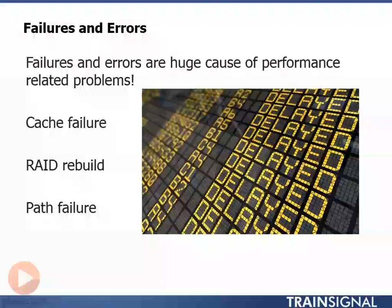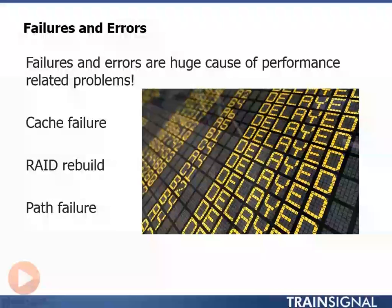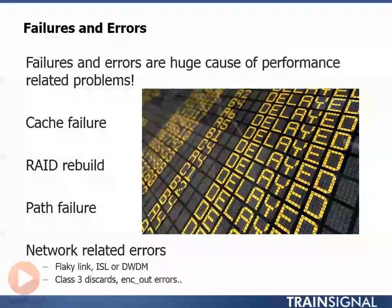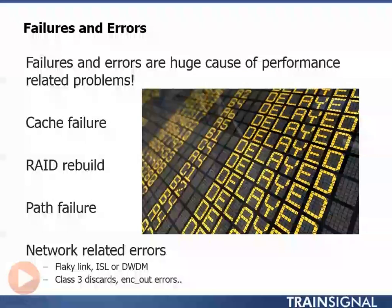This can also have an impact on performance. But it's not just clear-cut failures like failed cache boards, failed drives, or failed paths. Small and intermittent errors can also impact performance. On the fibre channel SAN, for example, faulty cables or faulty optics and SFPs can result in dirty connections that clock up things like encoding errors. These errors can impact performance as well as cause paths from hosts and storage to become flaky and unreliable, going up and down.